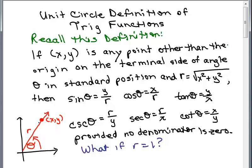Well, if you put in 1 for r, for the sine of θ, you'd have y over 1, which means it's just y. If you put in 1 for r for the cosine of θ, we would have x over 1, which means it would be equal to x. It wouldn't change the tangent or the cotangent because r isn't involved at all. But for the cosecant, if r was 1, the cosecant would simply be 1 over y and the secant would be 1 over x.